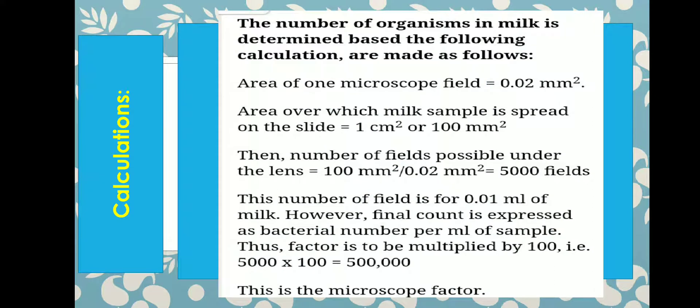Calculations: the area of one microscopic field is equal to π r², where π is 3.14 and radius is 0.08 mm, giving an area of one microscopic field equal to 0.02 mm². The marked area is 1 cm², which equals 100 mm².